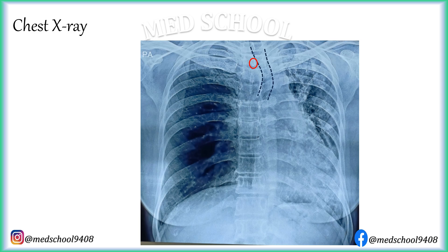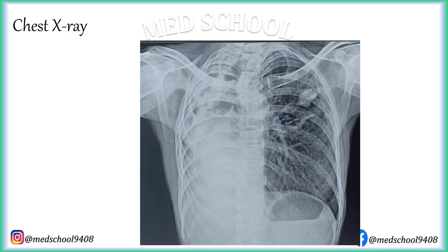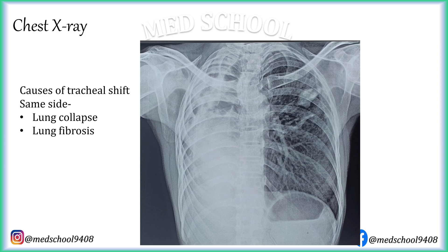One can also notice that the right hilum and right heart border are not visible, indicating the whole mediastinum is shifted to the left. While in another x-ray, the trachea along with mediastinum is shifted to the right. Tracheal shift is not a disease in itself but a sign of underlying disorder. Trachea is shifted to the same side in cases of lung collapse and lung fibrosis, while it is shifted to the opposite side in cases of pleural effusion and pneumothorax.